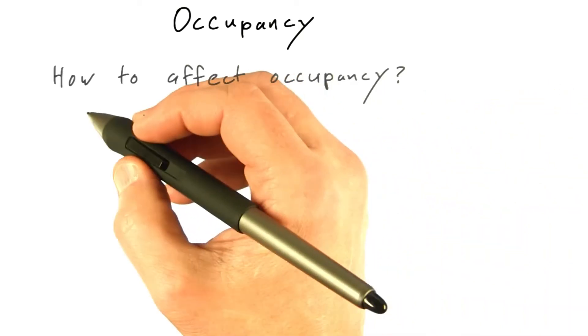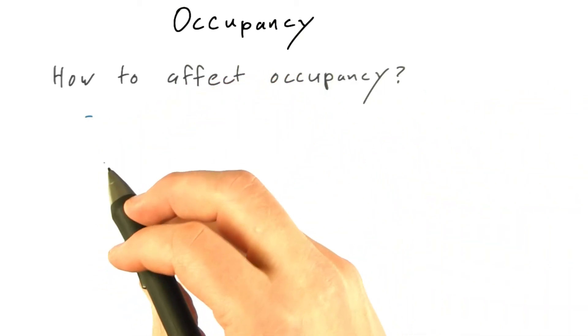The examples we're looking at get pretty good occupancy. In general, how do you affect the occupancy of a kernel?